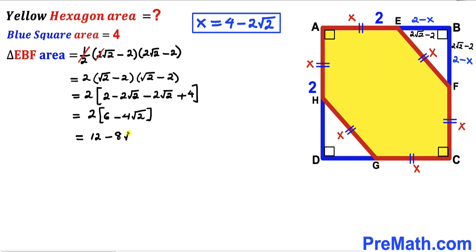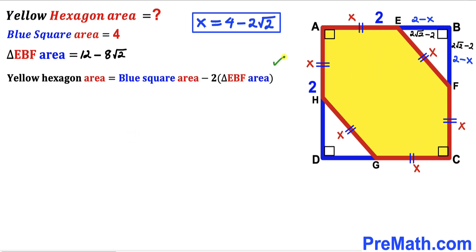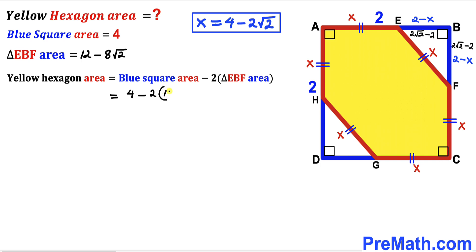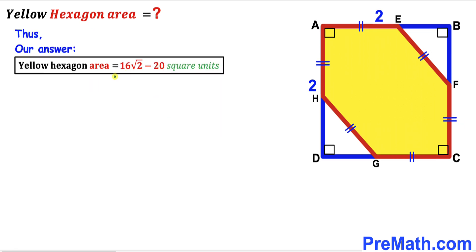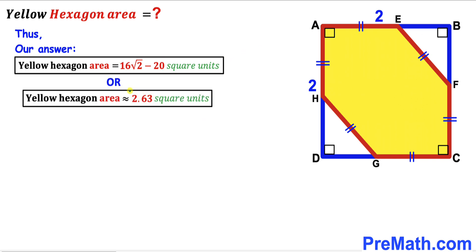For the final step, the yellow hexagon area equals the blue square area minus 2 times the triangle EBF area: 4 minus 2 times (12 minus 8√2). Distributing gives us 16√2 minus 20. So the area of this yellow hexagon is 16√2 minus 20 square units, which is approximately equal to 2.63 square units. Thanks for watching and please don't forget to subscribe!